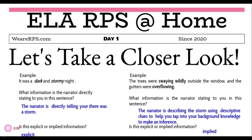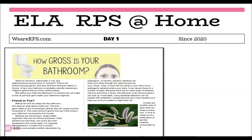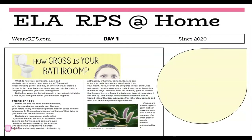Now let's go into some guided practice where we can practice with an actual non-fiction article. This article is titled 'How Gross Is Your Bathroom?' You have two minutes to focus on the first two paragraphs and answer this question: Where in the text is there an example of explicit information? Begin.